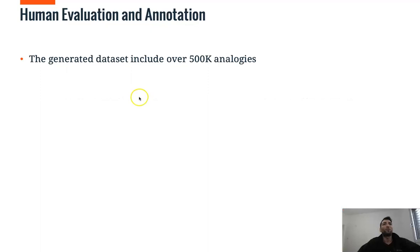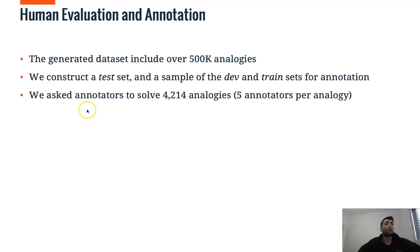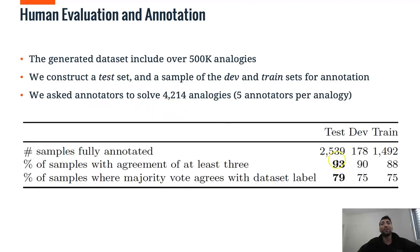Now, the automatic generation part generates over 500,000 analogies. We construct a test set and sample a dev and train sets for annotation. We ask five annotators to solve 4,214 analogies. And we see that in 93% of the cases, there is an agreement of at least three.